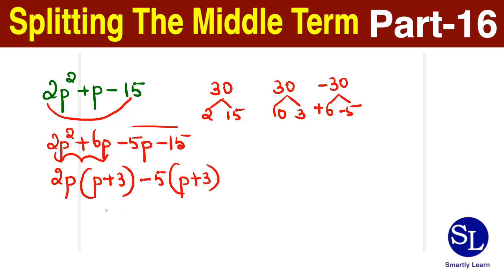Now the p plus 3 is common in both the cases, so I'm taking that outside. So it is p plus 3 into 2p minus 5. So 2p squared plus p minus 15 can be split as p plus 3 into 2p minus 5.